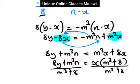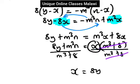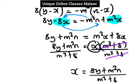So here, after combining and rearranging the terms, the answer is: x is equal to 8y plus m cubed n, divided by m cubed n plus 8.